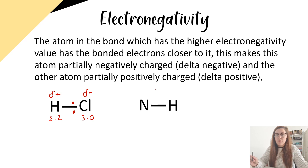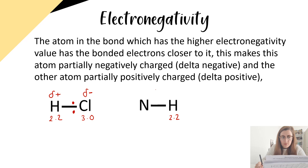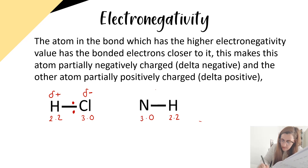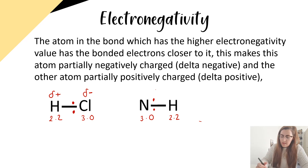Another example would be nitrogen and hydrogen. Hydrogen's electronegativity value is 2.2, and nitrogen's electronegativity value is 3.0. So nitrogen has a stronger electronegativity value. Therefore, the electrons will be lying ever so slightly closer to the nitrogen atom. Therefore, nitrogen will be delta negative and hydrogen will be delta positive.